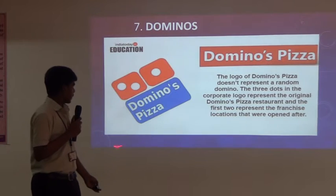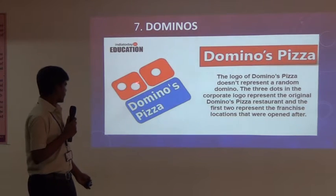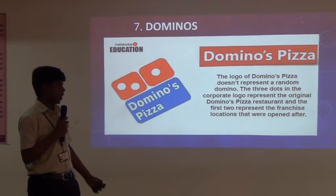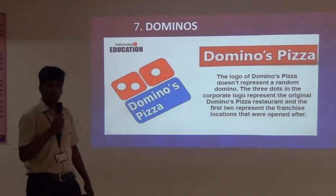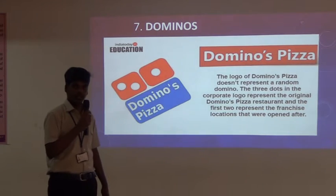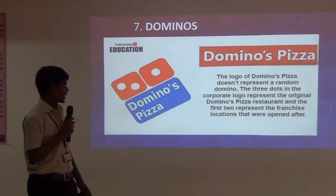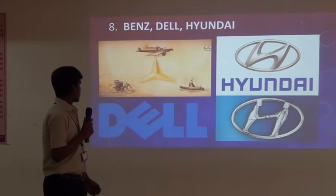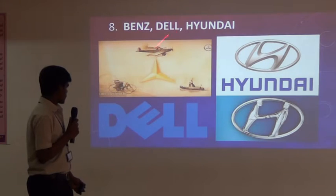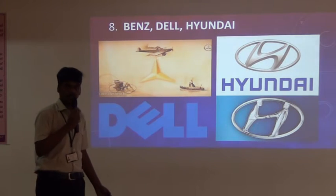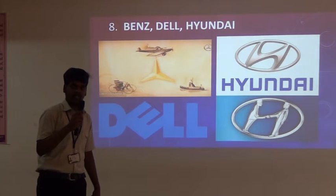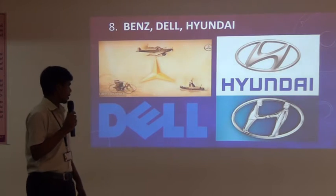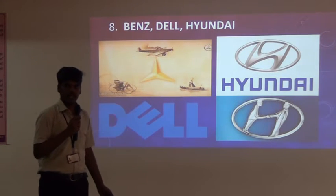And Domino's. You can see the three dots, which are not random — they represent the original location where the restaurant was first invented. You can also see the main symbol with three lines, representing earth, sky, and water, meaning they aim to develop in all three areas.